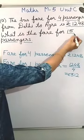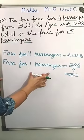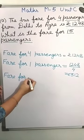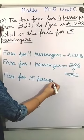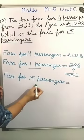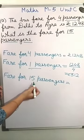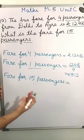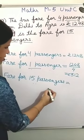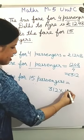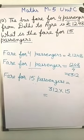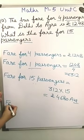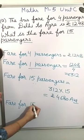Now you have to calculate fare for 15 passengers and you are having fare for 1 passenger. We multiply them because we are calculating value for many passengers. So the fare for 15 passengers — we multiply by 15. 312 multiplied by 15. The answer is equivalent to rupees 4680. Here you write: fare for 15 passengers is rupees 4680.